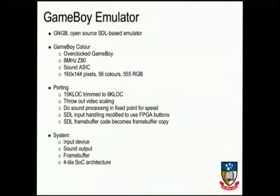About halfway through the project, having met all academic goals, something more fun was attempted — a multi-core Game Boy emulator. They took GNGB, an open source Game Boy Color emulator with 15,000 lines of code, and threw most of it out — removing abstractions for different platforms, SDL library calls — since the system runs without an operating system, writing pixels directly to a memory region and reading button input directly from a register.